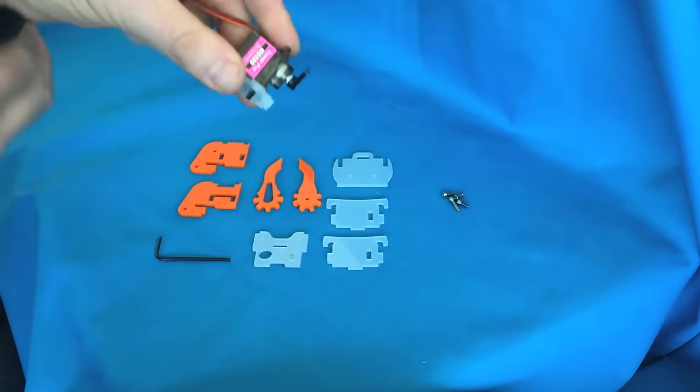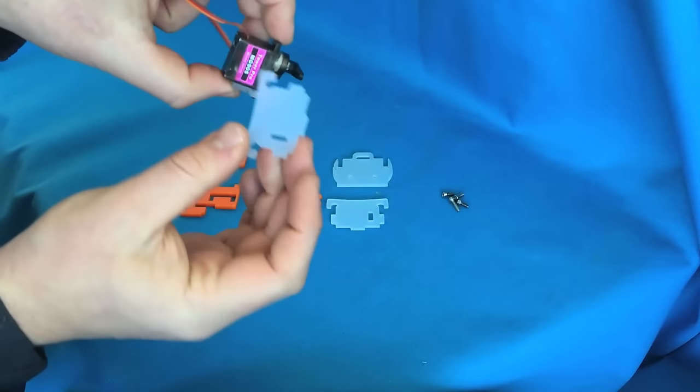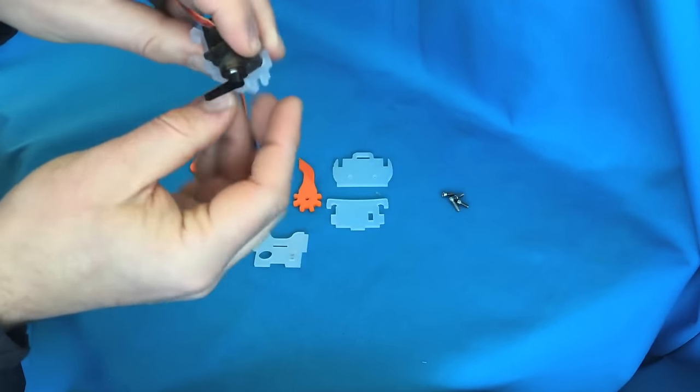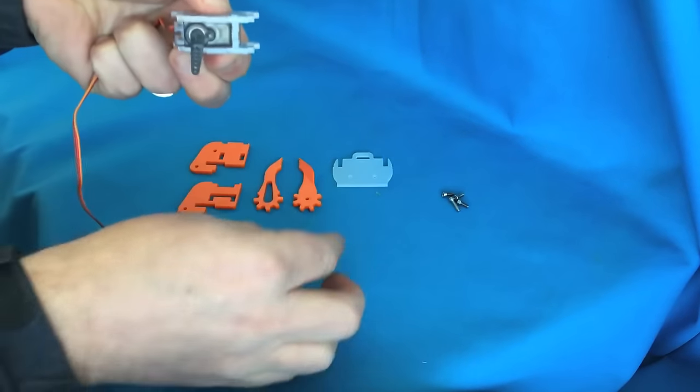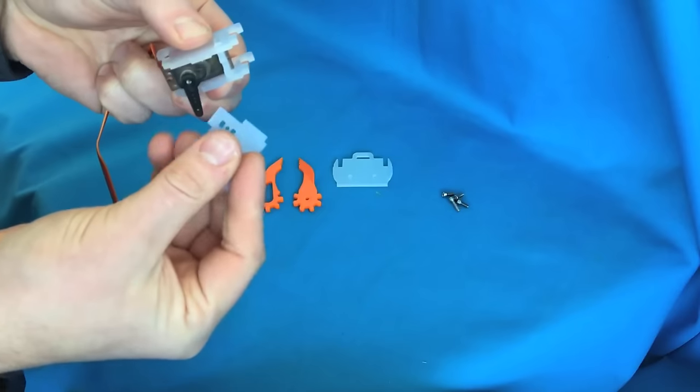Take the small bit of plastic with the hole through it and clip it onto the side of the servo. Then push the two pieces with the hooks on top onto the side of that. You can see it all clipped together.